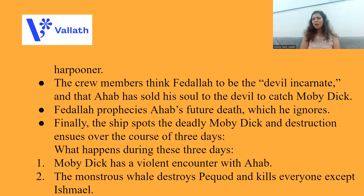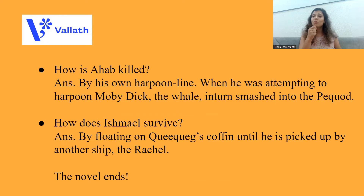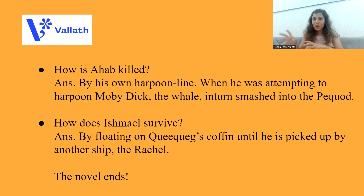Finally, the ship spots the deadly Moby Dick and destruction ensues over the coming three days. Moby Dick has a violent encounter with Ahab. The monstrous whale Moby Dick destroys the Pequod and kills everyone on the ship except Ishmael. Ahab, the monomaniacal man preoccupied with killing Moby Dick, is actually killed by his own harpoon line — when he attempts to harpoon Moby Dick, the whale smashes into the Pequod and the harpoon enters Ahab, and he is dead. Ishmael survives because Queequeg's coffin becomes a lifeboat for him. Ishmael floats on Queequeg's coffin until he is picked up and rescued by another ship called the Rachel.